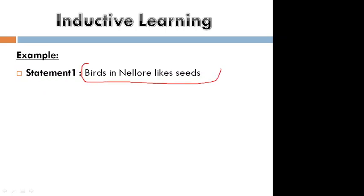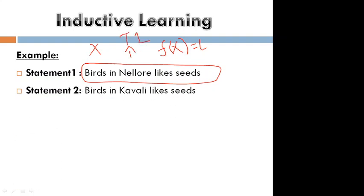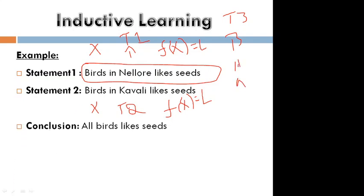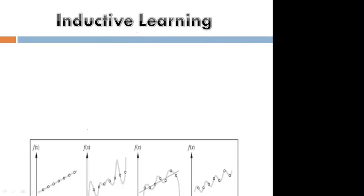Consider one example: statement one — birds in Nellore like seeds. So x is a bird, the function of x is 'likes seeds', and the location is Nellore — this is training set one. Statement two: birds in Kawal — function is 'likes', training set two. Similarly, training set three covers Bangalore, Hyderabad, Goa, and so on. Finally, what we conclude is: all birds like seeds. This is the best example for supervised learning.